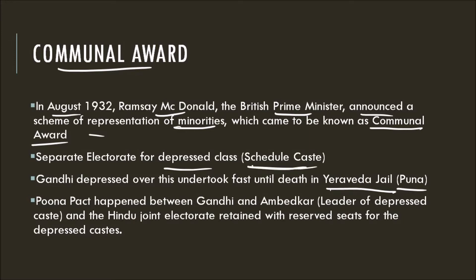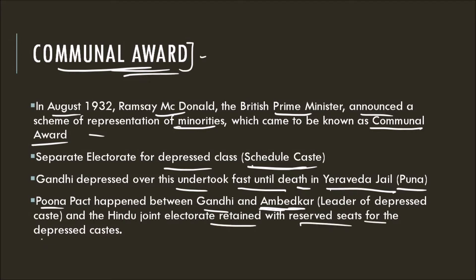This disappointed Gandhiji. At one end, he was trying to unite the country, while the British were dividing it with such awards. On the other hand, the leader of the depressed class, Dr. B.R. Ambedkar, was in support of the Communal Award, as the minority community had been neglected and he defined it as a chance for equality. Gandhi decided to undertake a fast unto death. Then the Poona Pact happened between Gandhi and Ambedkar — the Hindu joint electorate was retained, but with reserved seats for the depressed castes.